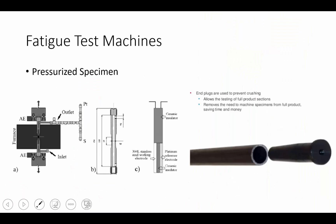Another way for us to apply biaxial loading is by pressurizing a specimen. This is very typical for trying to understand the fatigue loading in tubes, hollow tubes, and pipes. The specimen is placed into specialized fixtures where the grips apply an axial load in tension or compression, while also having a port to allow a pressurizing gas to fill the hollow specimen. This type of test is fairly typical in testing of piping, particularly in nuclear power plants.